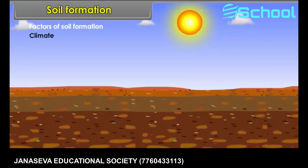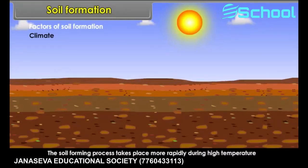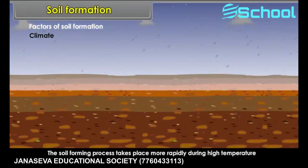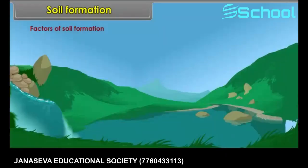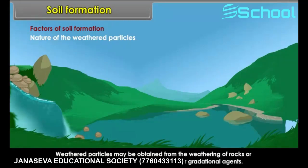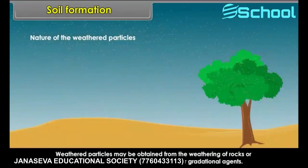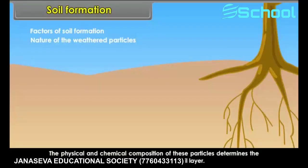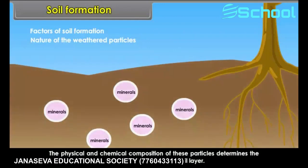Factors of soil formation. Climate — the soil forming process takes place more rapidly during high temperature and high rainfall. Nature of the weathered particles — weathered particles may be obtained from the weathering of rocks or deposition of materials by rivers, winds, or other gradational agents. The physical and chemical composition of these particles determines the relative proportions of different minerals in the soil layer.